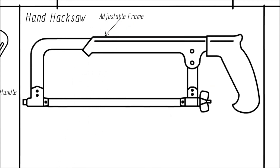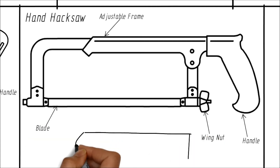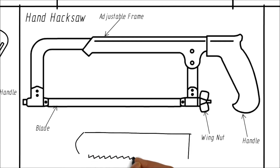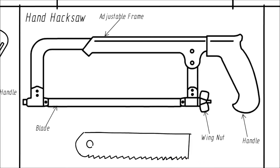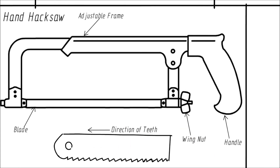Let us name the parts now: adjustable frame, wing nut to tighten the blade, the handle, and the blade. The cut in action should always take place in the forward direction. Here we see the direction of the teeth.